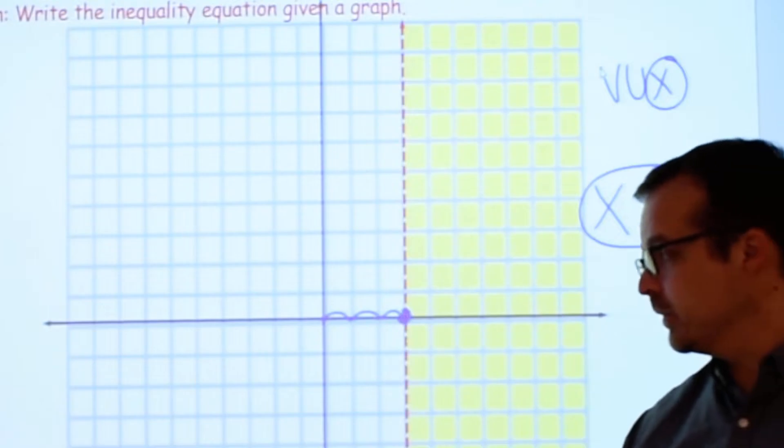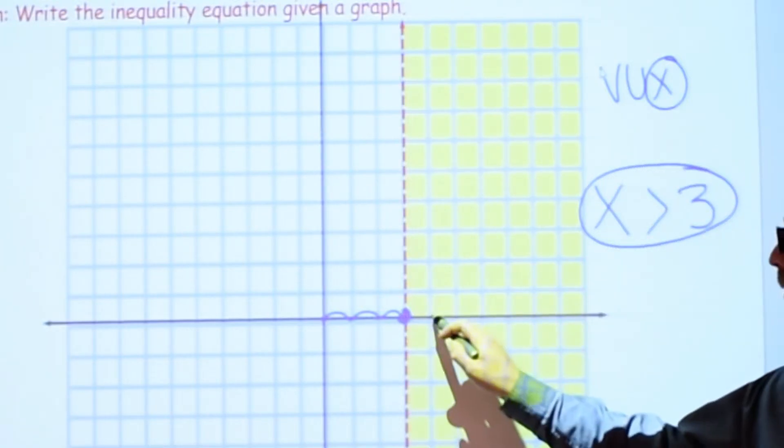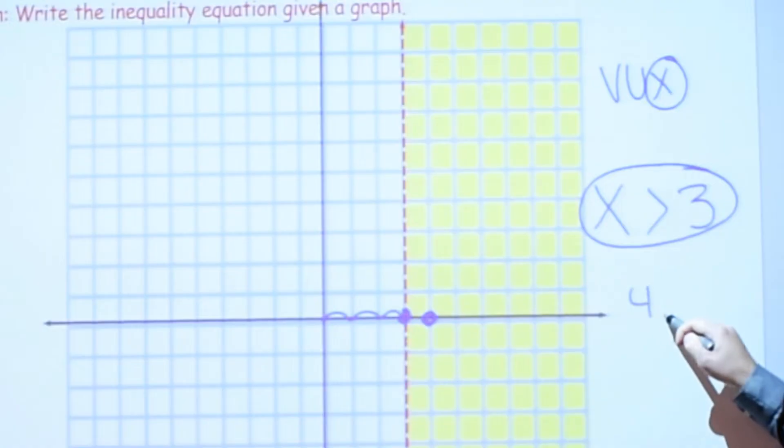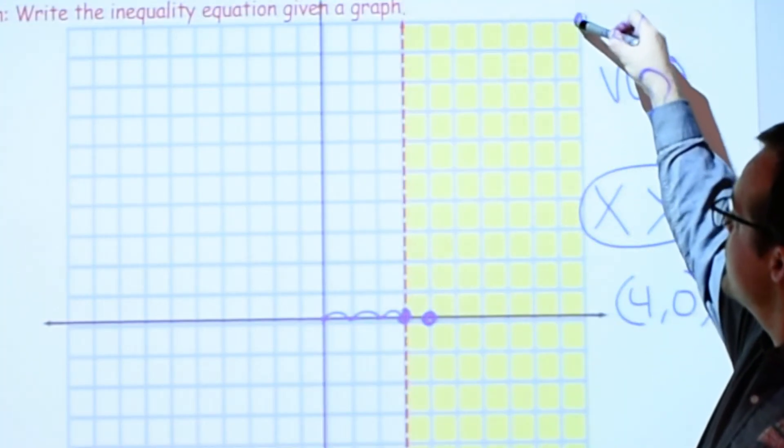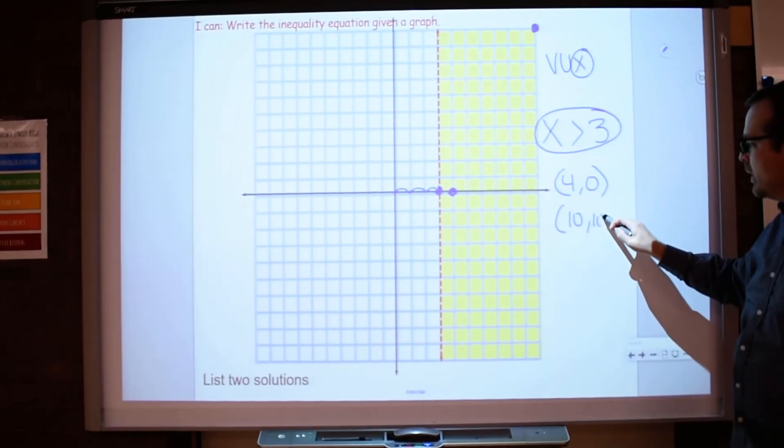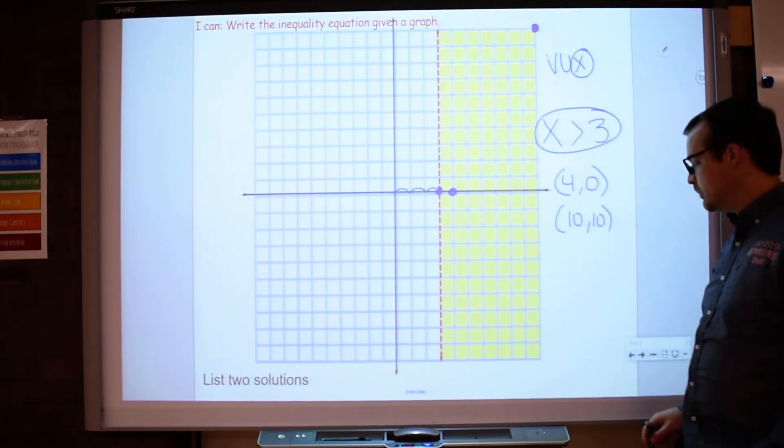To list two solutions for this one, we could choose right here would be great. This would be 4, 0. That's a solution there. And that would be like 4 is greater than 3, which is true. Or it could go way up here to 10, 10. And that would work as well as a solution because it's in the shaded region.